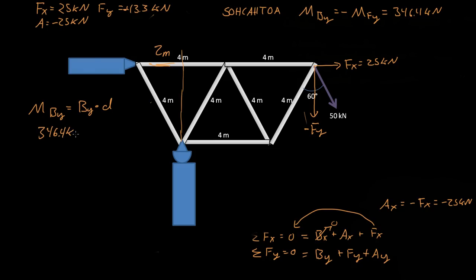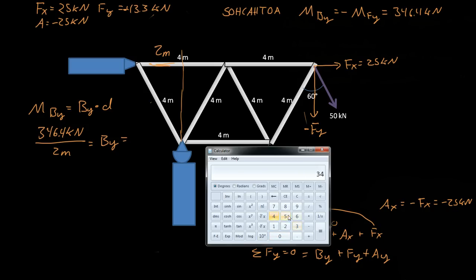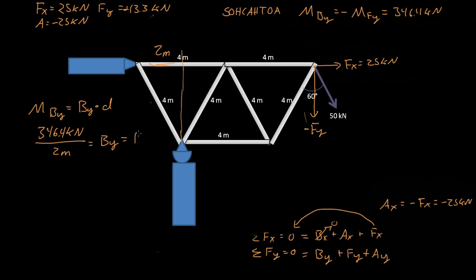So we get 346.4 kilonewtons divided by the distance of two meters to get By. So that is equal to 346.4 divided by 2 equals 173.2 kilonewtons. So By is equal to 173.2 kilonewtons.